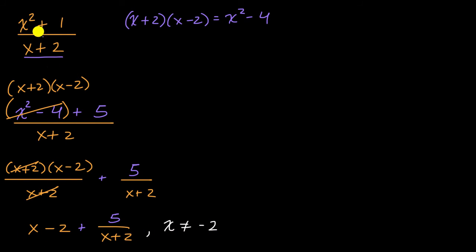And so here, we'd say, x squared plus one divided by x plus two is x minus two, and then we have a remainder of five.